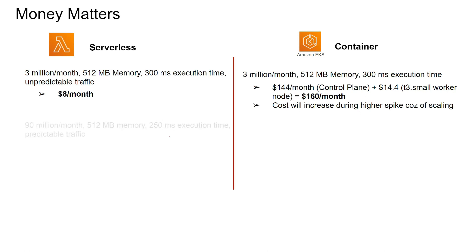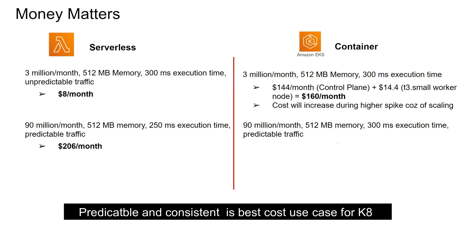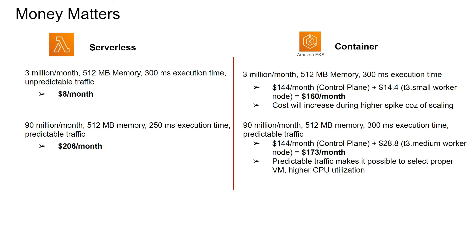Now let's look at the next use case: 90 million requests per month, 512 megabytes of memory, each execution taking 250 milliseconds, with predictable traffic. The Lambda cost comes to around $206 per month. For containers with the same parameters and predictable traffic, the control plane cost is fixed at $144 per month, and a T3.medium worker node is around $129 a month — totaling around $173 per month. So in this case, the container is cheaper than Lambda, because predictable traffic makes it possible to select the proper VM and CPU utilization can be higher. The key takeaway is that one is not inherently cheaper than the other — it all depends on the use case.